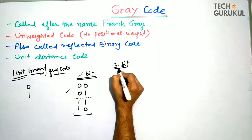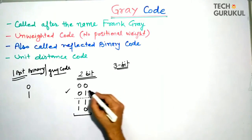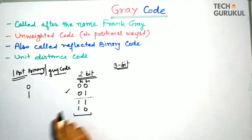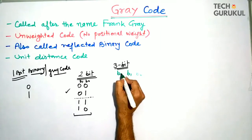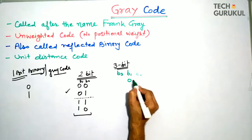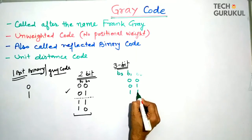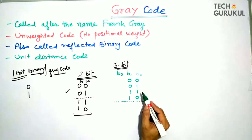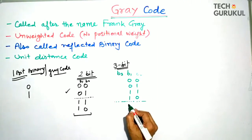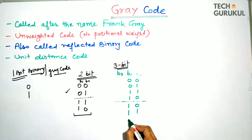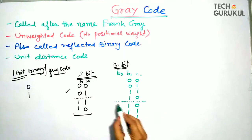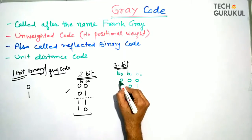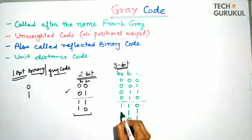For three-bit Gray code, we take the two-bit code as b0 and b1, then add another bit as the MSB. We write the two-bit code sequence: 00, 01, 11, 10, then take its mirror image below — 10, 11, 01, 00. For the upper half we prefix zeros, and for the lower half we prefix ones. This gives us the complete three-bit Gray code.